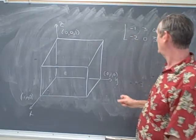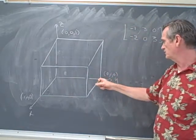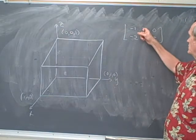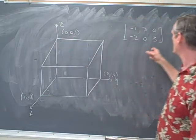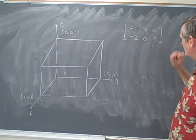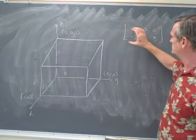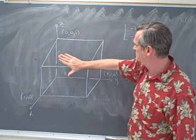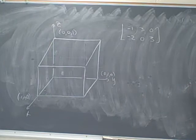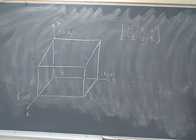And then the y-axis, the unit vector in the y-axis, got mapped to the vector (3,0). The unit vector along the z-axis got mapped to the vector (0,3). So if you think about this matrix, this matrix completely describes the projection of three space onto the plane that we're looking at. And if you think about a matrix, one of the things that you'd like to know is what is the image of the matrix and what is the kernel of the matrix.